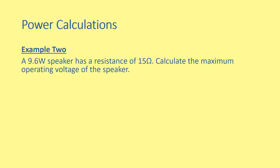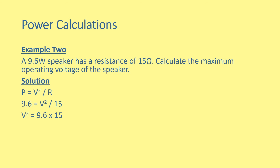Example 2: a 9.6 watt speaker has a resistance of 15 ohms. Calculate the maximum operating voltage of the speaker. For the solution, write down the equation from the relationship sheet, substitute the values, rearrange, and we end up with a value for V squared. We don't want V squared — we want V. So we need to square root that number in order to get the answer of 12 volts.